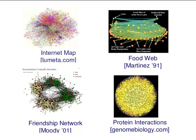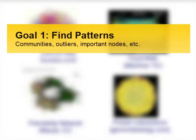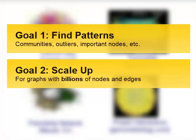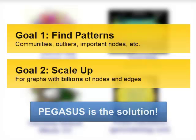Many networks, which we will also call graphs, can be found around us. Examples include the internet, social networks, biological networks, and many more. When analyzing these networks, we usually have two goals in mind. First, we want to find patterns and detect anomalies in the networks, such as finding important nodes, outliers, or communities. Second, we want to be able to scale up our analysis to graphs that have billions of nodes and edges. Pegasus is the system that achieves these two goals.